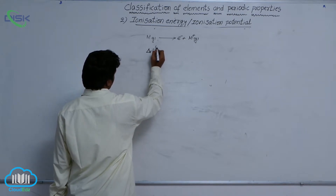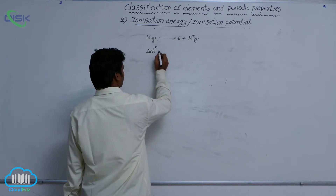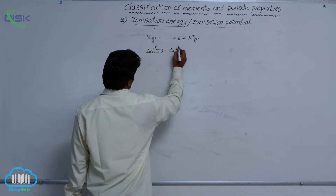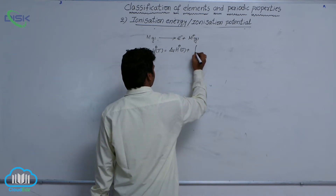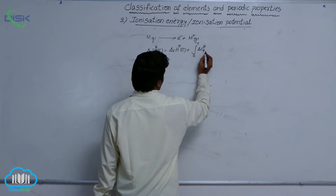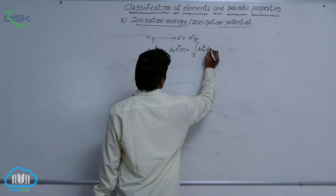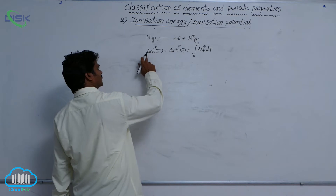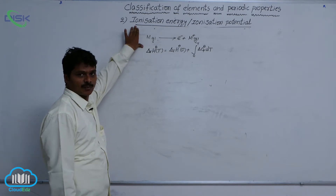For this chemical reaction, the enthalpy of reaction at T Kelvin equals the enthalpy of reaction at 0 Kelvin plus the integral from 0 to T of ΔCp° dT. Here, ionization energy is defined at 0 Kelvin only — it is the energy required to remove an electron from the valence shell of a neutral, isolated, gaseous atom at 0 Kelvin.